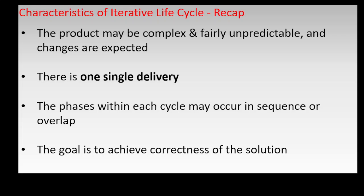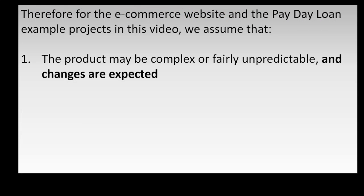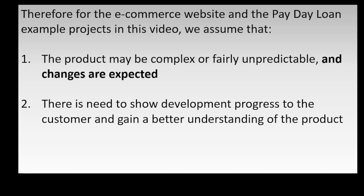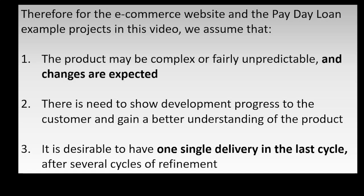Prototyping and spiral models follow the iterative life cycle. Therefore, for the e-commerce website and the payday loan example projects in this video, we assume that the product may be complex or fairly unpredictable and changes are expected. There is a need to show development progress to the customer and gain a better understanding of the product. It is desirable to have one single delivery in the last cycle after several cycles of refinement.